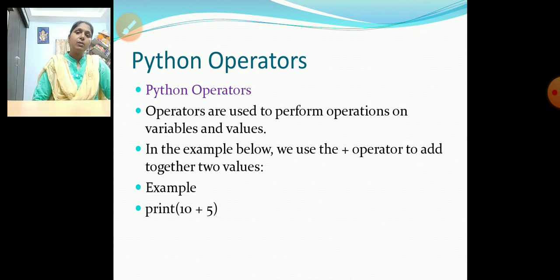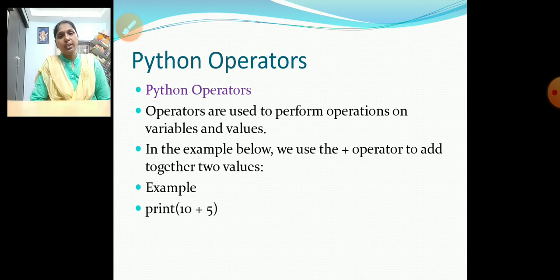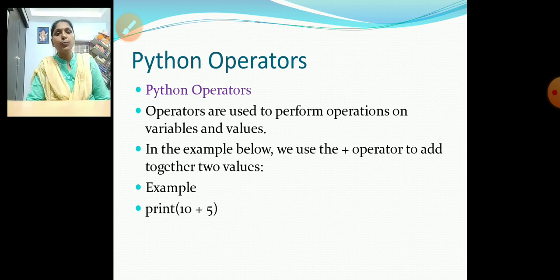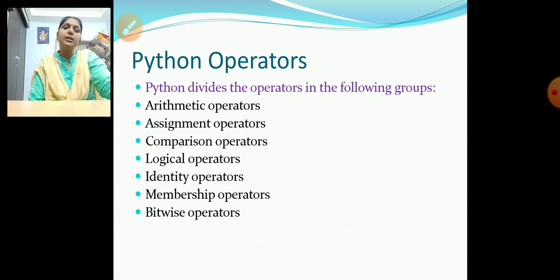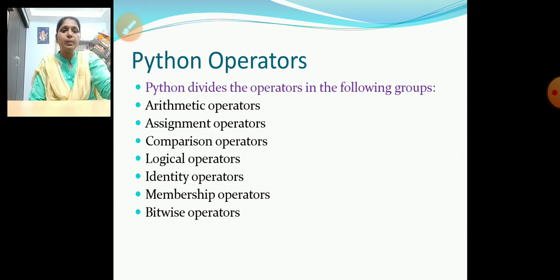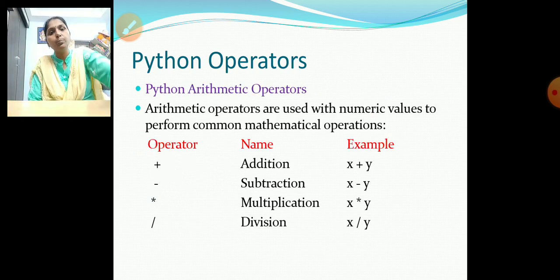Now, one more important concept is Python operators. Operators are used for performing many operations on variables and values. For example, the plus operator is used to add two values — print(10 + 5) gives 15. Python has different operator types: arithmetic operators, assignment operators, comparison operators, logical operators, membership operators, and bitwise operators. Let us see these one by one in brief.